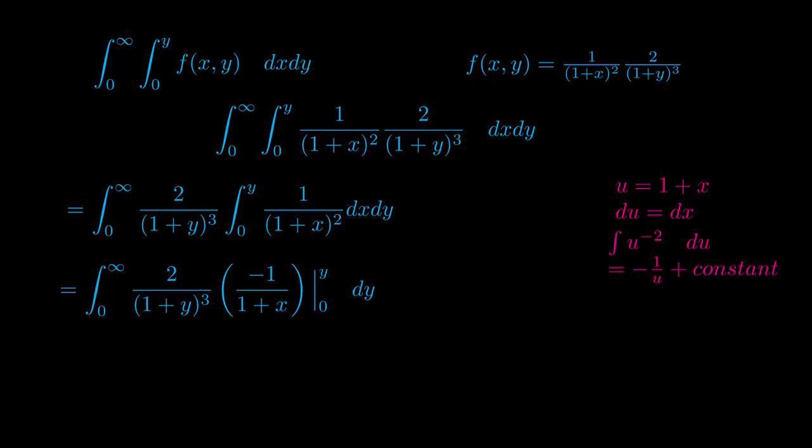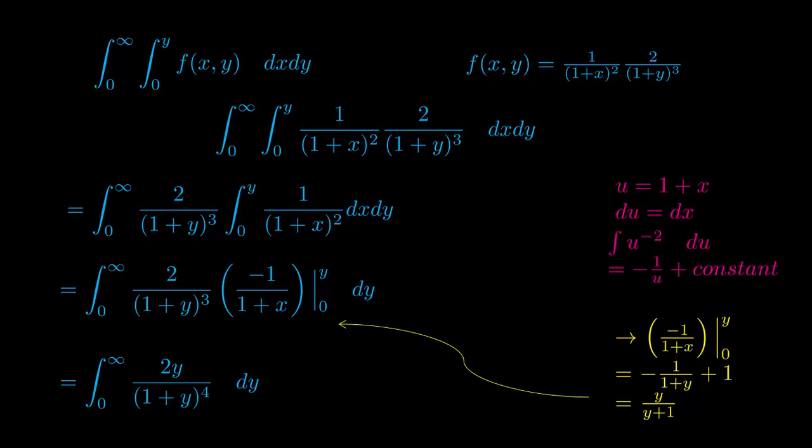Once you substitute 1 plus x back into u, you'll end up with that. To compute negative 1 over 1 plus x from 0 to y, you're basically going to end up with y over y plus 1. Substitute that back into the equation and you'll end up with 2y over (1 plus y) to the fourth dy.